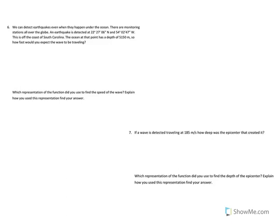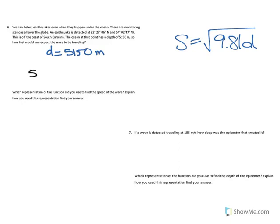So let's think about this in terms of the fact that our equation is the square root of 9.81D. So in this case, we know D. We know that the depth of the water is 5150 meters. So to solve this, we're going to plug 5150 into the place of D.